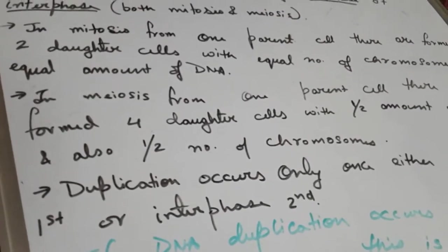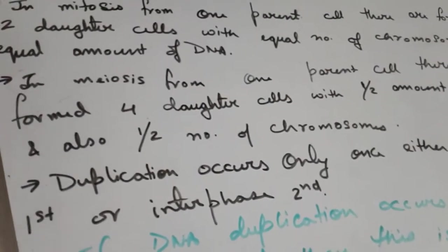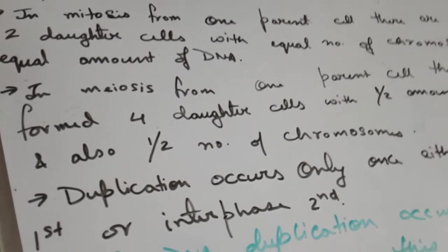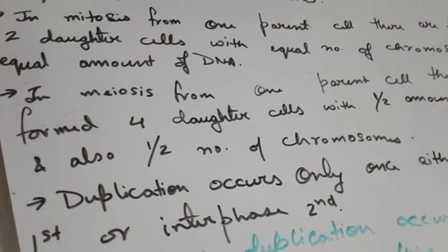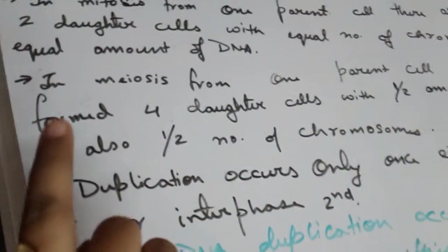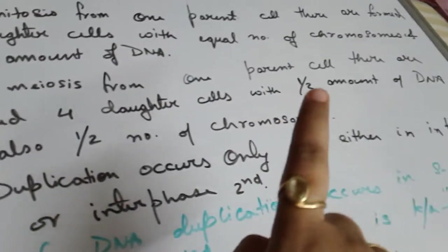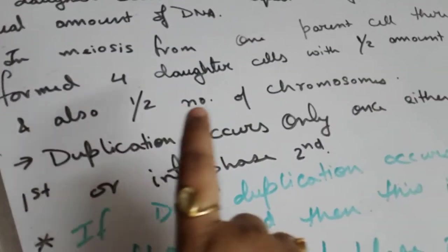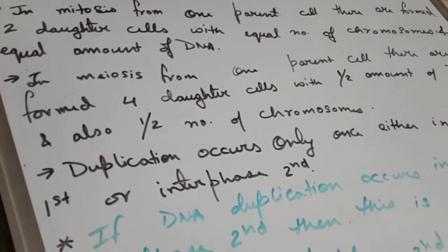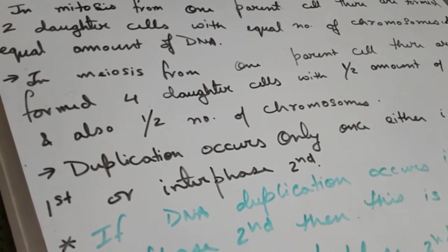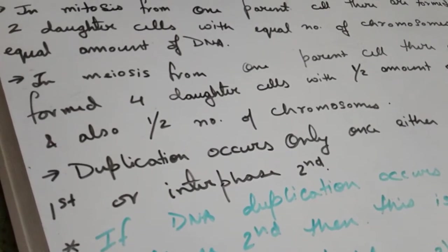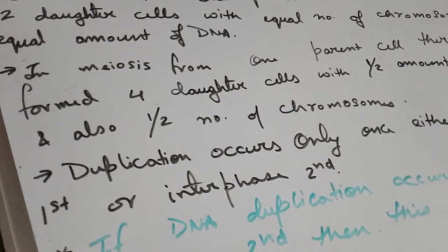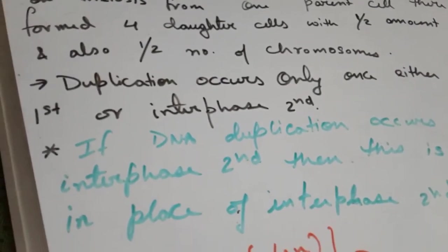In mitosis, there is no decrease in the amount of DNA — the same quantity and the same ploidy level is maintained throughout generations. In meiosis, however, from one parent cell, four daughter cells are formed with half the amount of DNA and half the number of chromosomes, which is why meiosis is also known as reductional division.